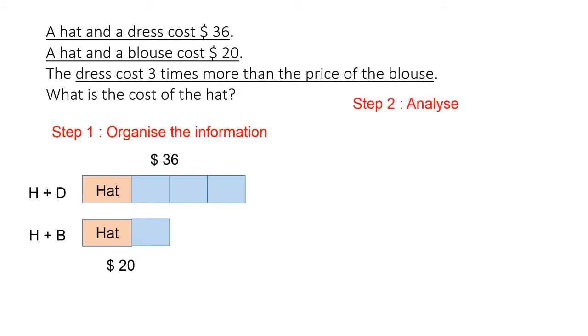So step two will be to analyze. We notice that the difference between the first set of model and the second set of model is two units. So the value of these two units will be the difference between $36 and $20. So first, we find out the difference between $36 and $20. Based on our calculation, we arrive at $16. So we also notice that these two units is $16.